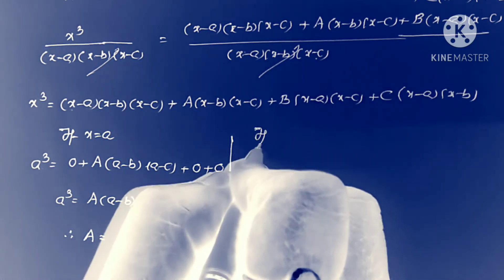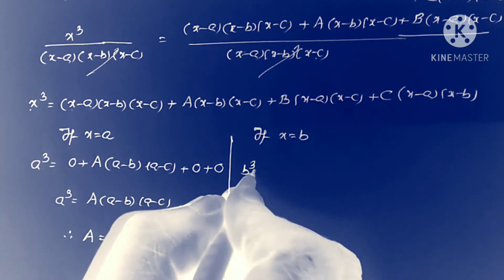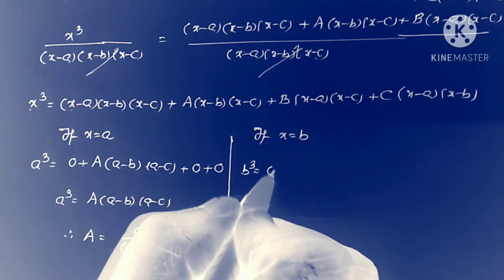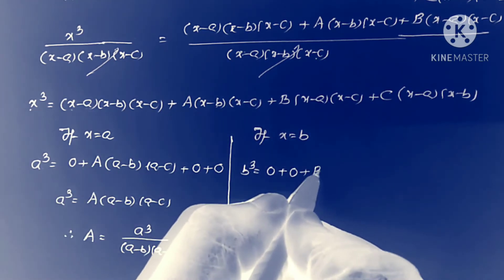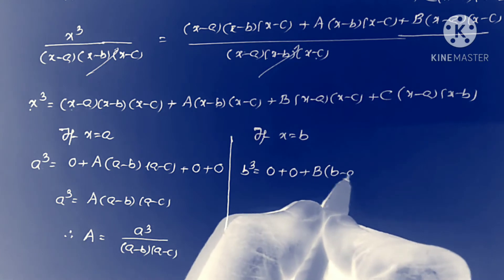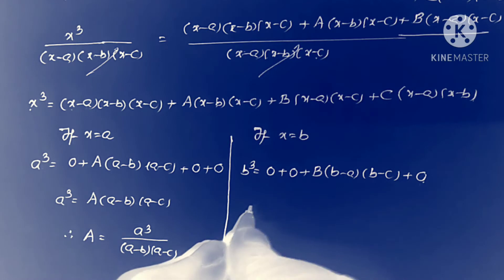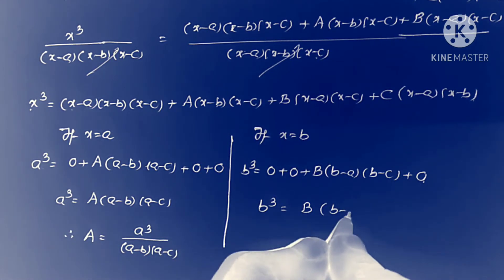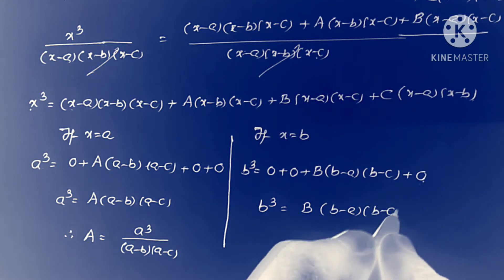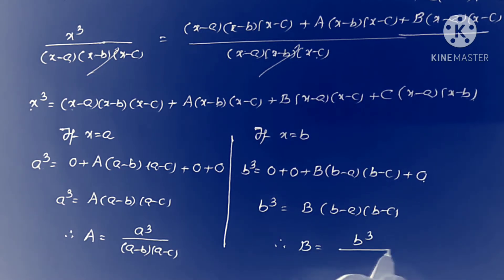Next, substituting x = b: (x-b) becomes 0, so the A and C terms vanish. We get b³ = B·(b-a)(b-c). Therefore the value of capital B equals b³ / [(b-a)(b-c)].